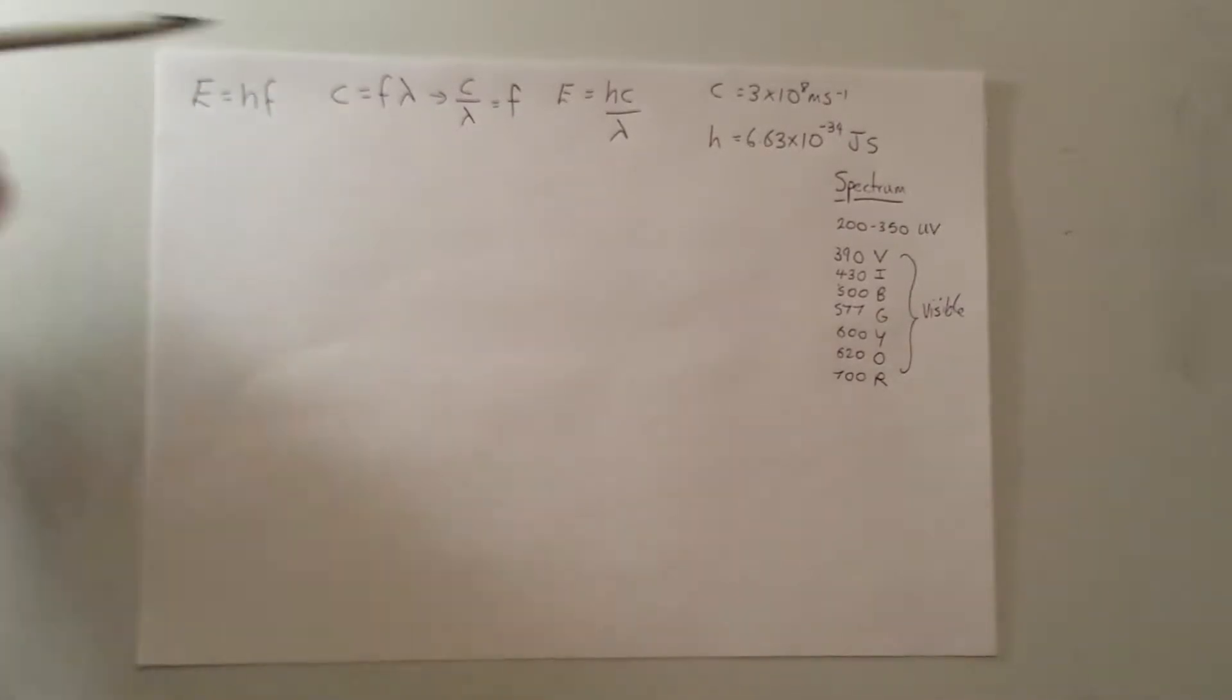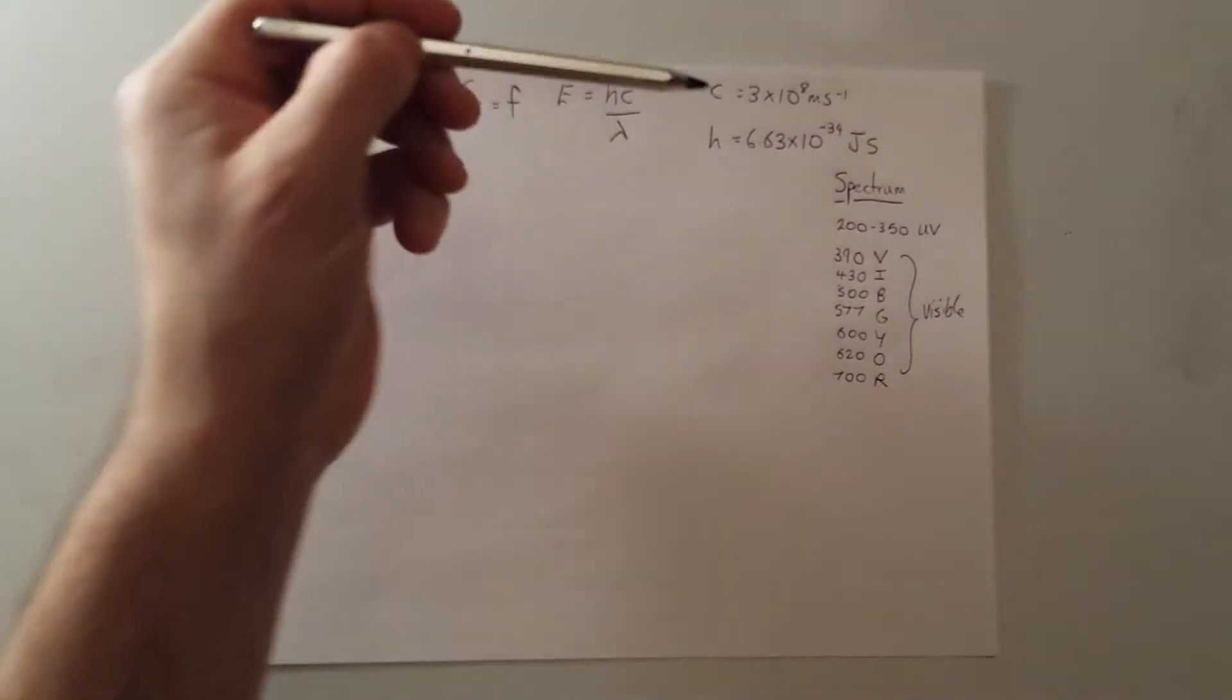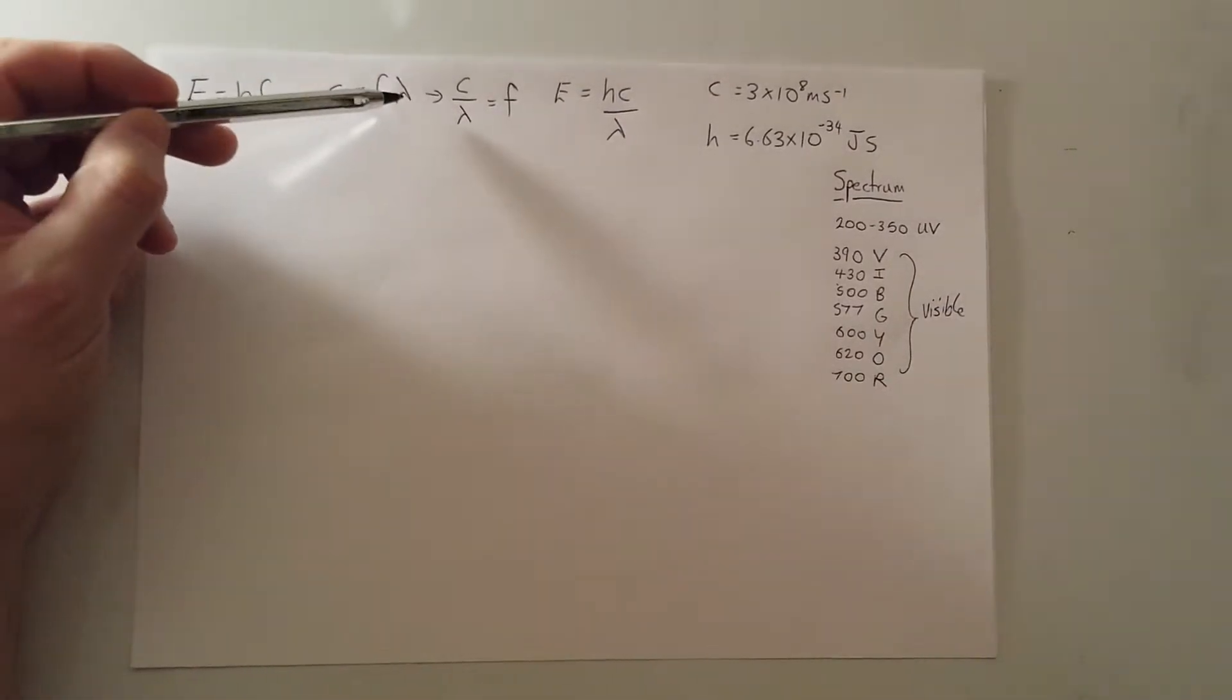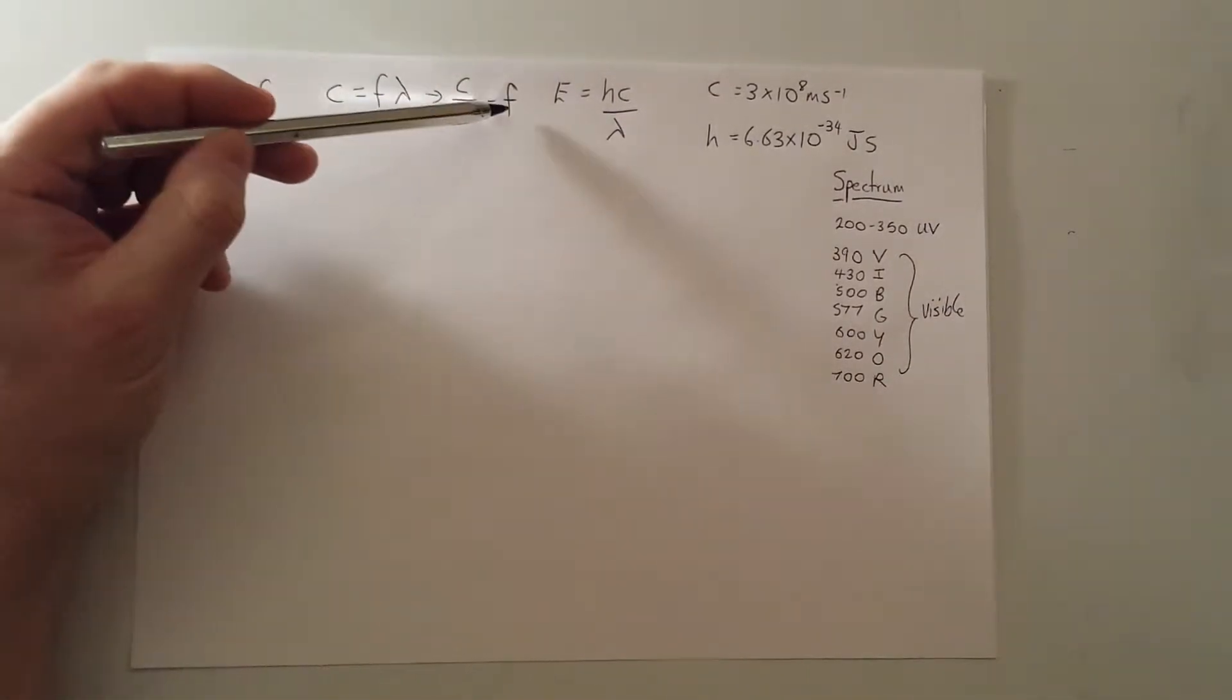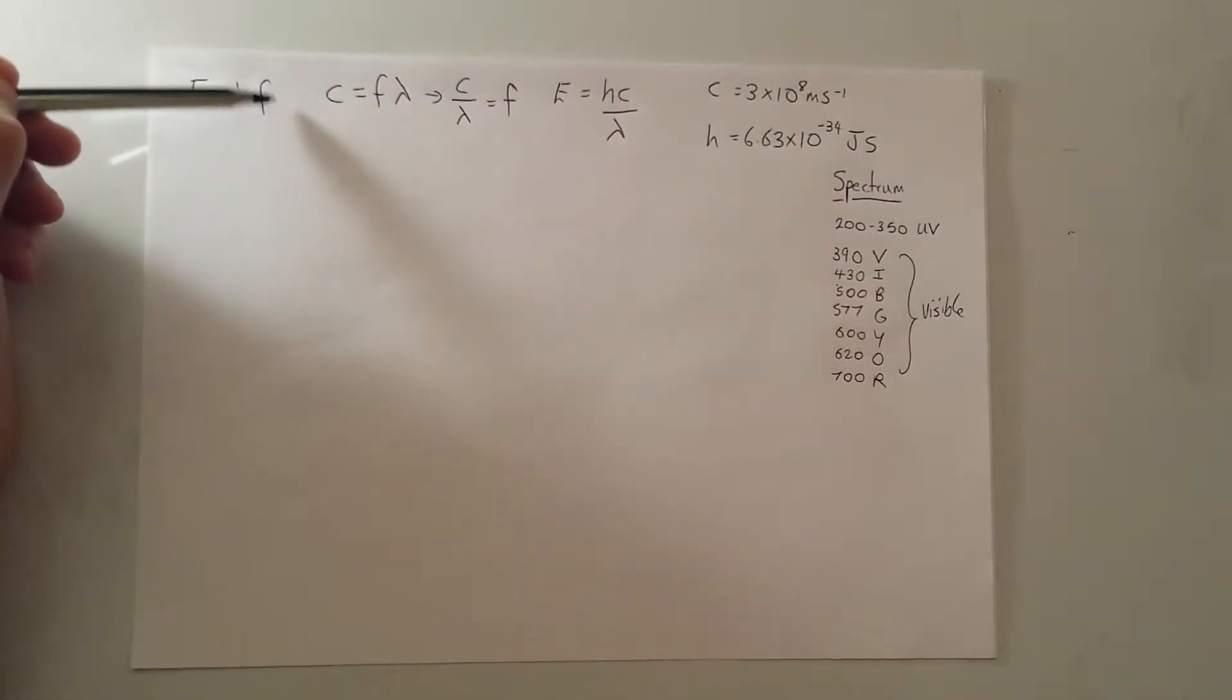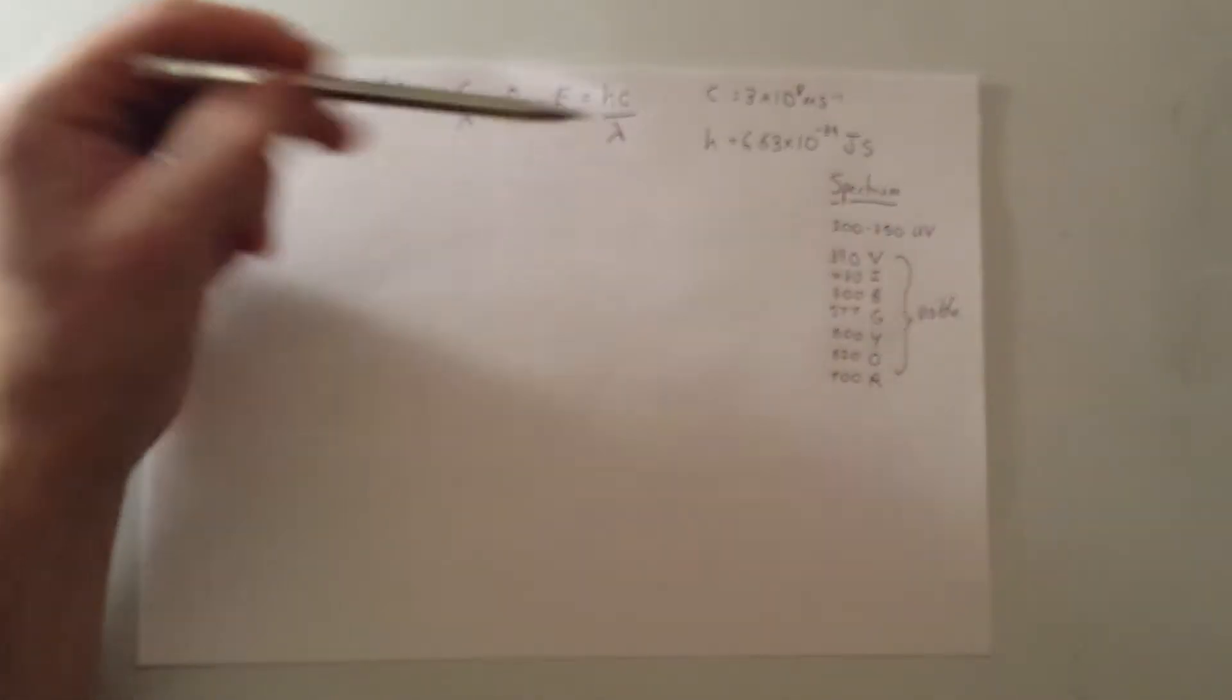Well, if a wave is traveling at the speed of light, C, or 3 times 10 to the 8 meters per second, we can say that C equals F lambda. So C over lambda is F, the frequency, the wavelength, the speed. We substitute our F and we leave E equals HC over lambda.